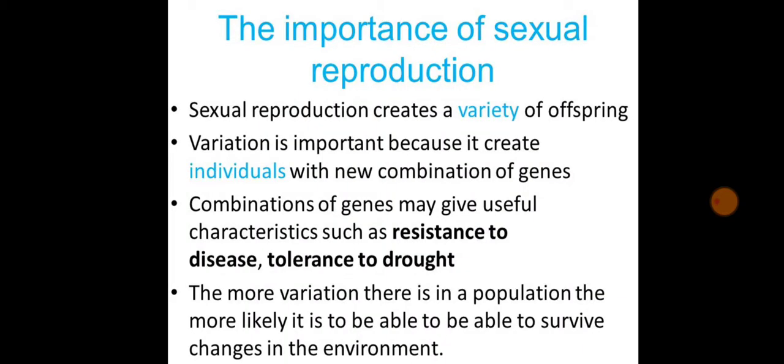What is the importance of sexual reproduction? Sexual reproduction creates a variety of offsprings. Variation is important because it creates individuals with new combination of genes. Combination of genes may give useful characteristics such as resistance to disease, tolerance to drought. The more variation there is in a population, the more likely it is to be able to survive changes in the environment. Just write down all these slides in your notebook.